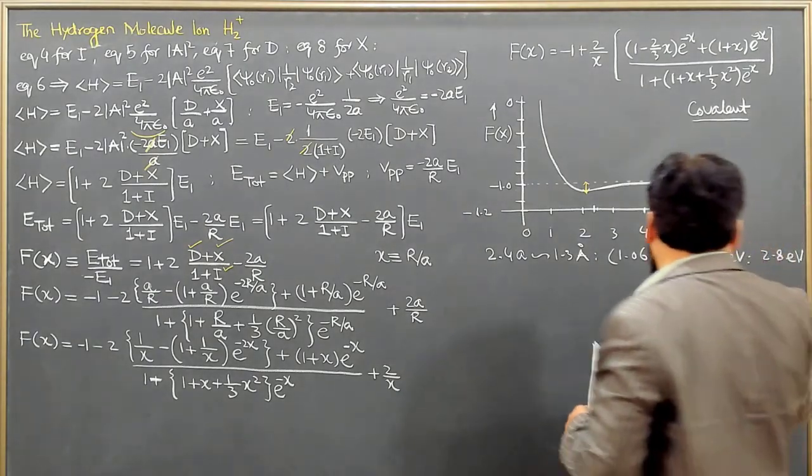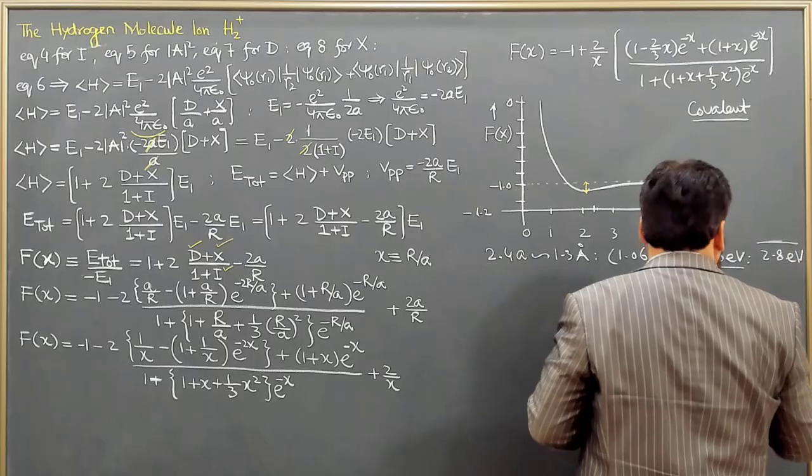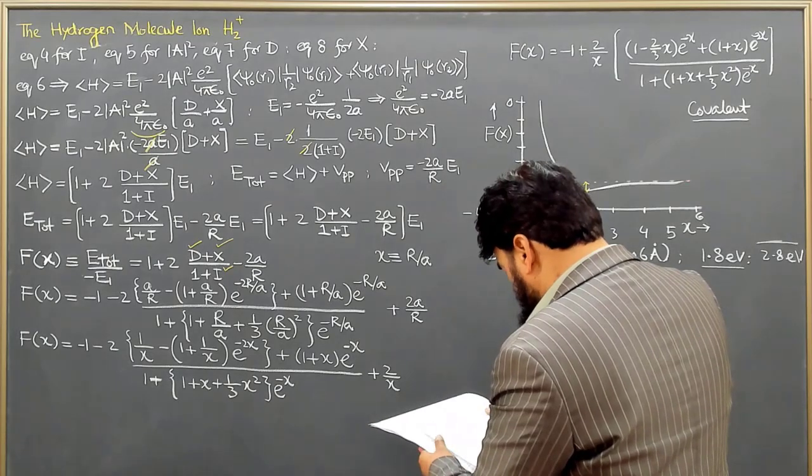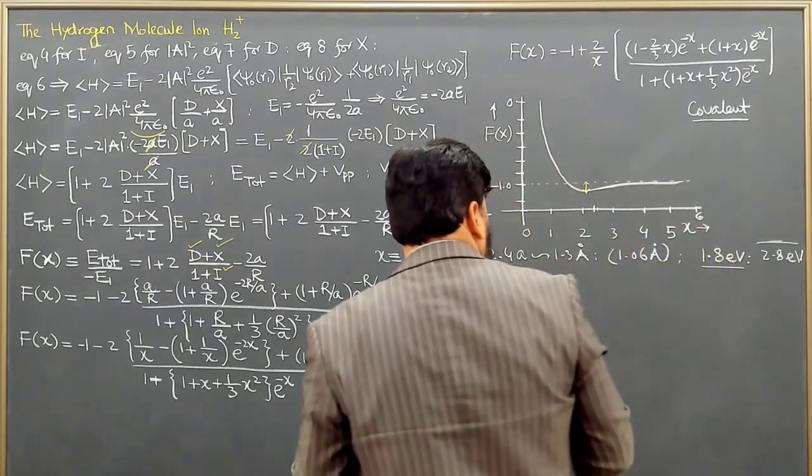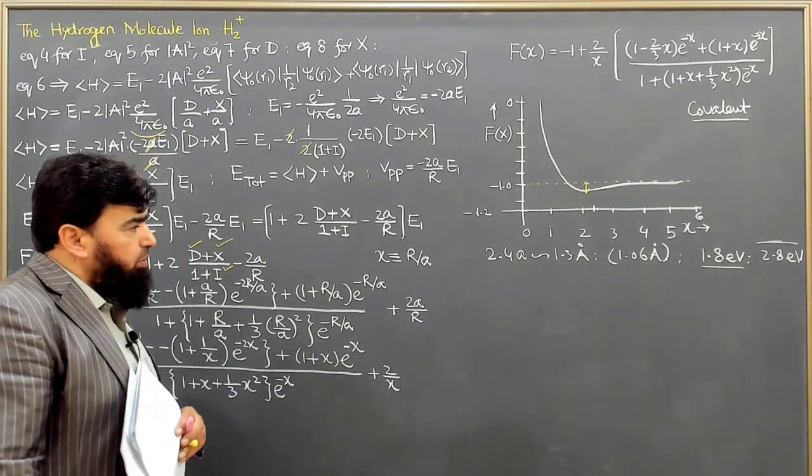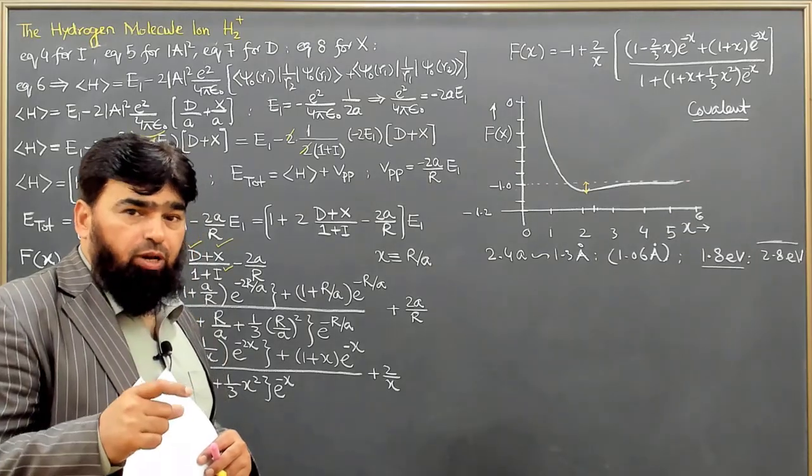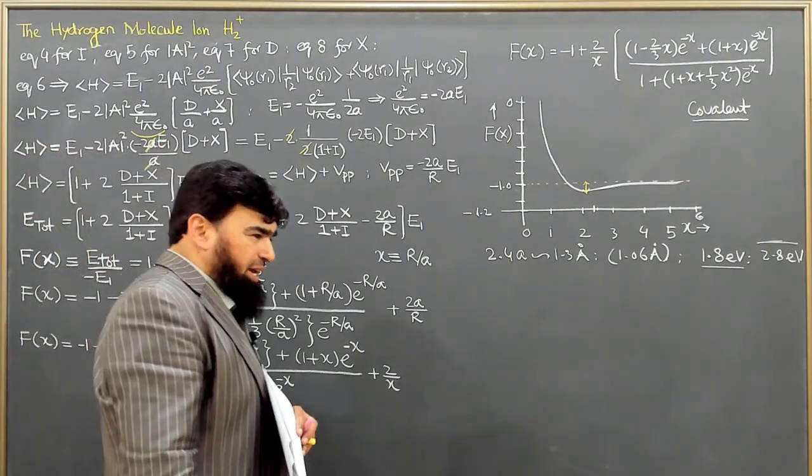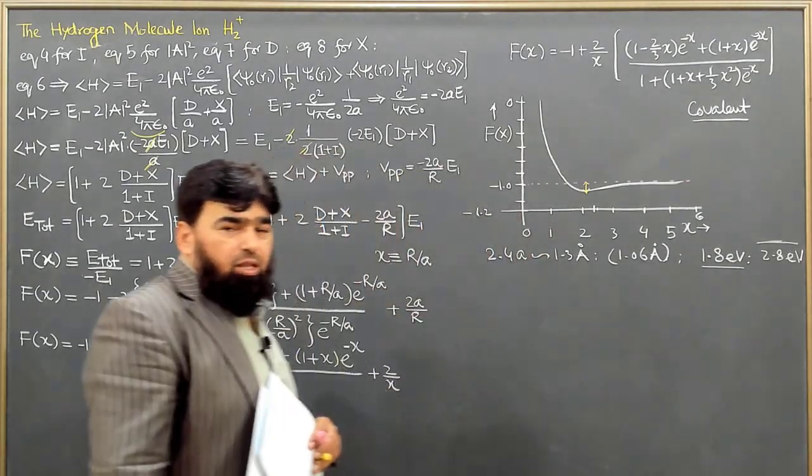When it goes below that one, then it means bonding has occurred. So this is quite amazing here. And we have 1.8 electron volt, and then here the experimental one is 2.8 electron volt. And that's the reason the variational principle always overestimates the ground state energy. So we have utilized the variational principle to calculate that energy—when bonding will occur, what energy it will have.